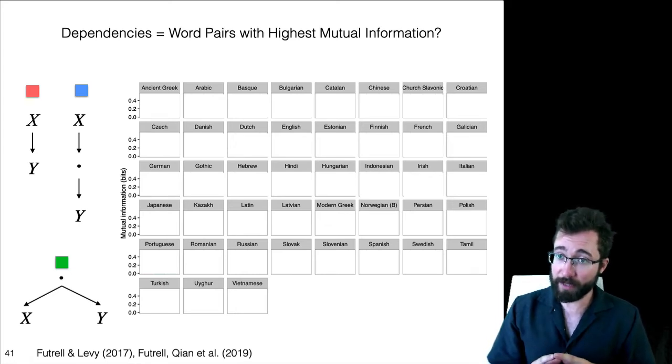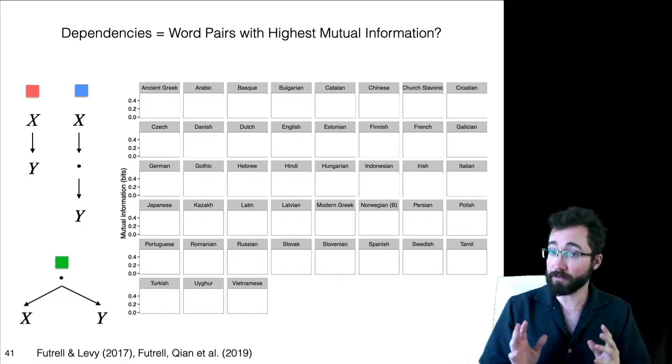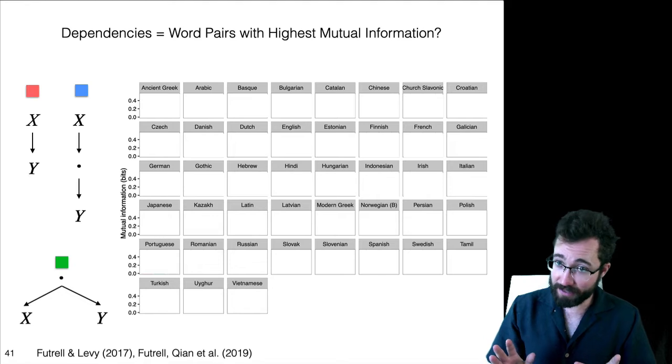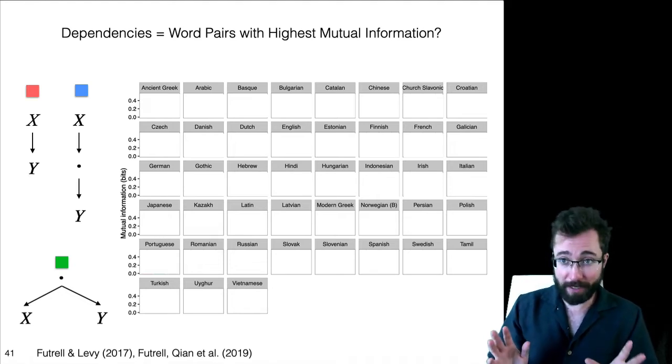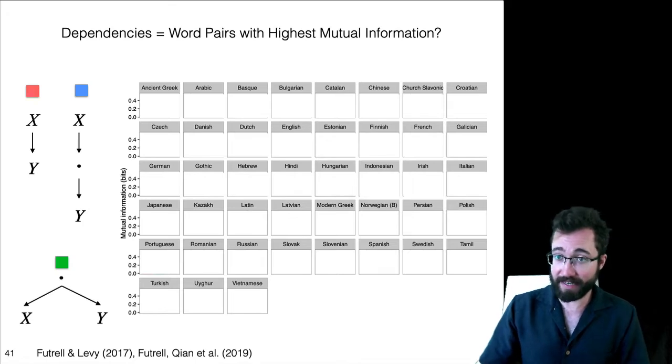And we're calculating mutual information here not between word forms of X and Y, but rather between the part of speech tags. The reason for that is data sparsity, the universal dependencies corpora are not big enough for us to get a reliable estimate of PMI based on word forms, so we use part of speech tags instead.